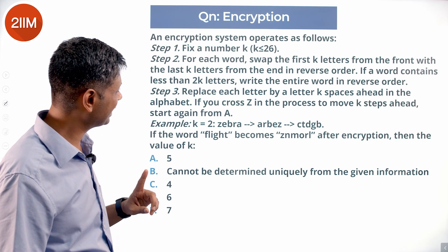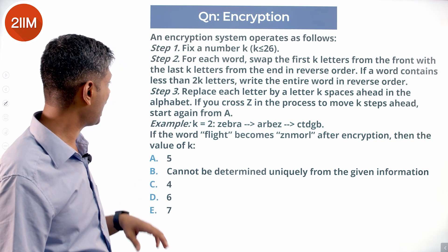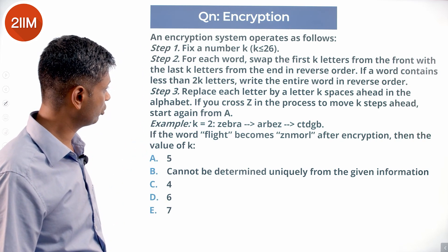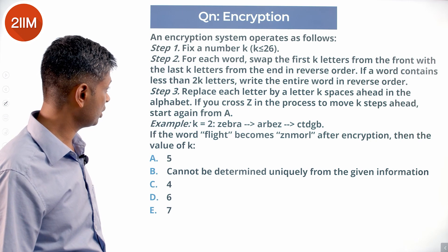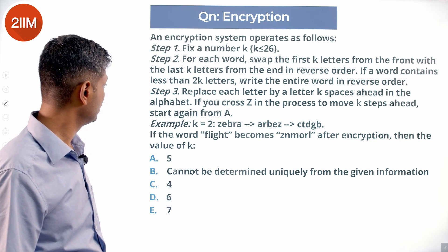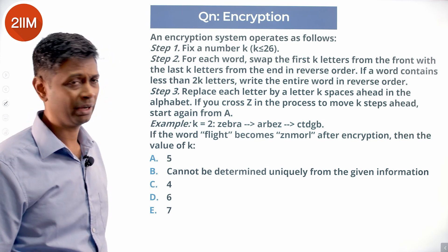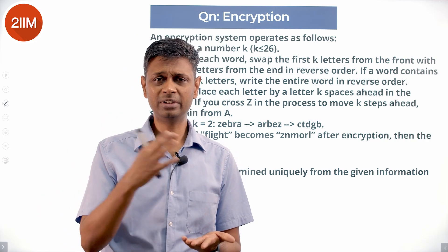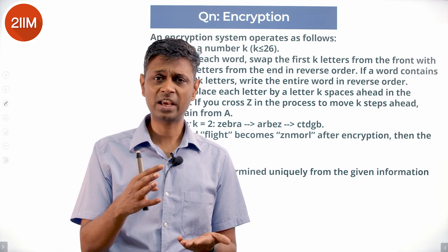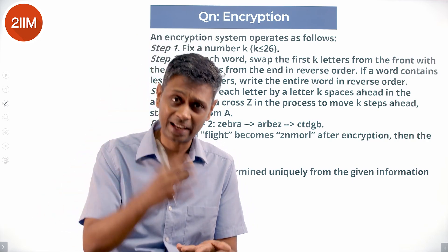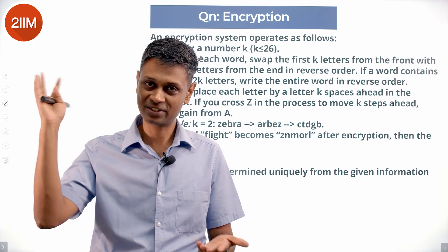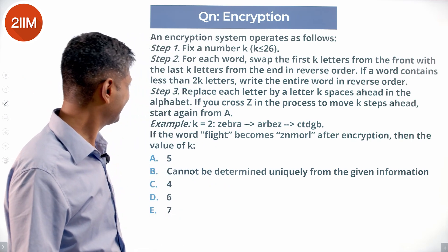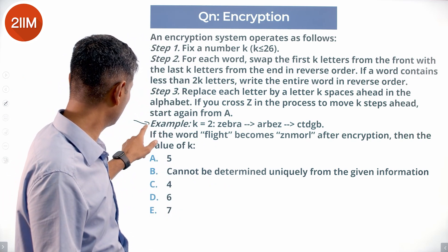Step two: replace each letter by a letter k spaces ahead in the alphabet. If you cross Z in the process, start again from A — so the alphabet goes cyclically: A B C D E F G H I J K L M N O P Q R S T U V W X Y Z, then back to A B C D E F G.